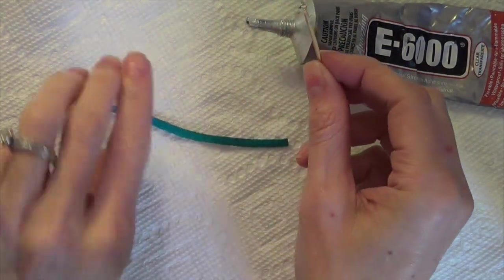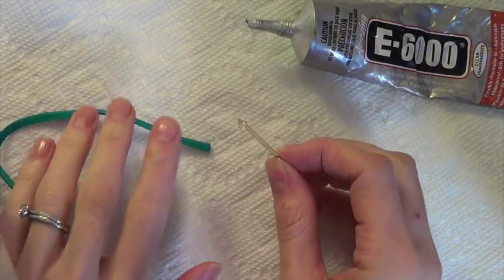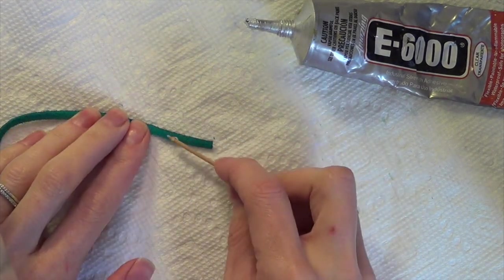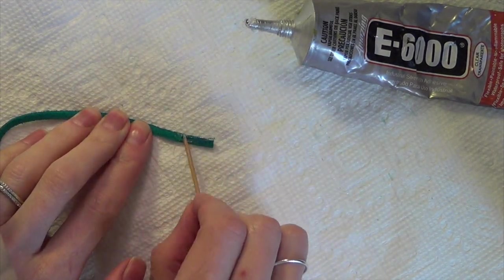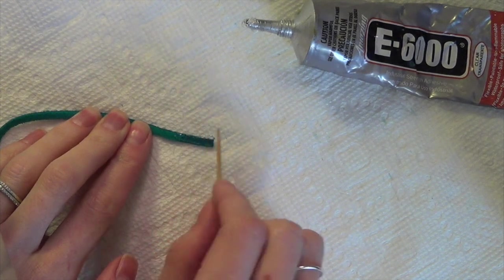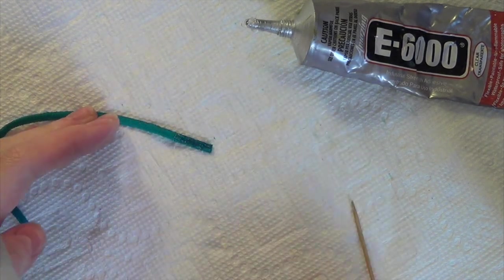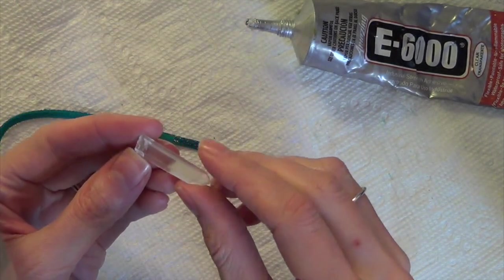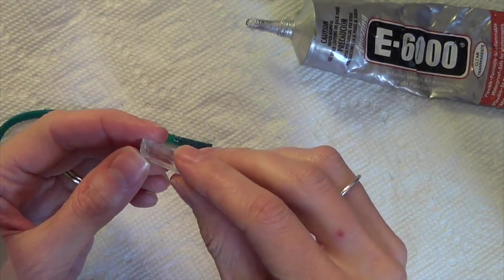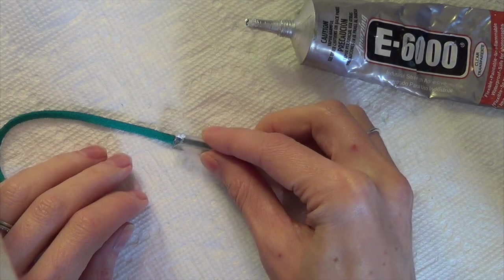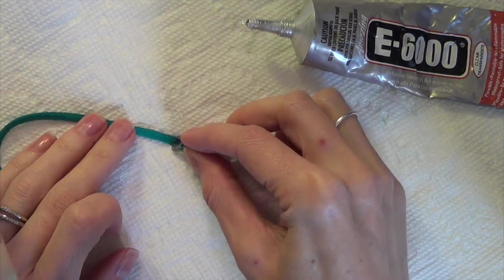The first thing we're going to do is apply a little bit of the E6000 using the toothpick to one end of the leather, just about the last three quarters of an inch. Spread it on there, try to make sure that you get out to the edges and cover as much surface area on that little piece of leather as possible.